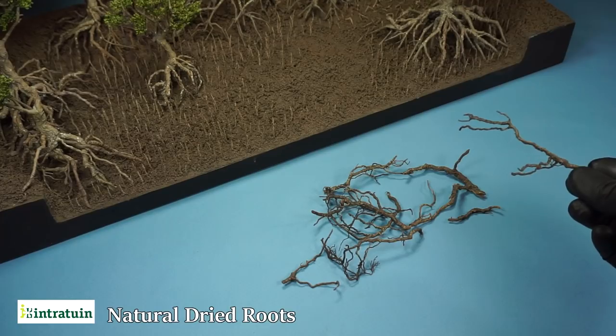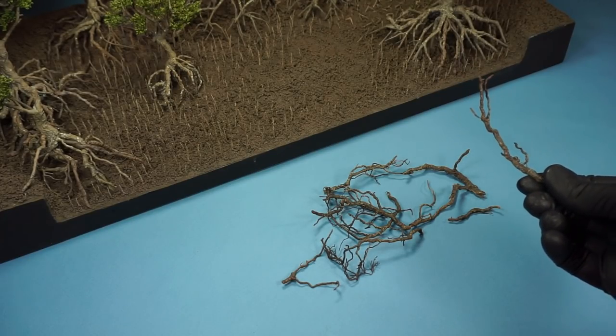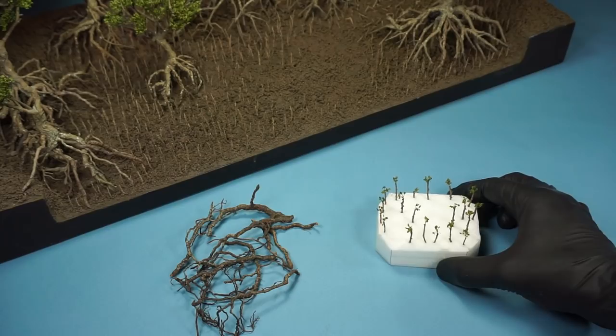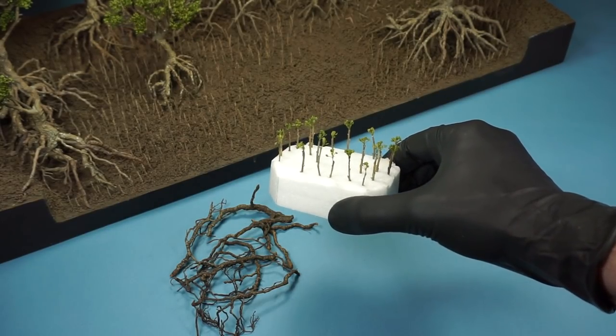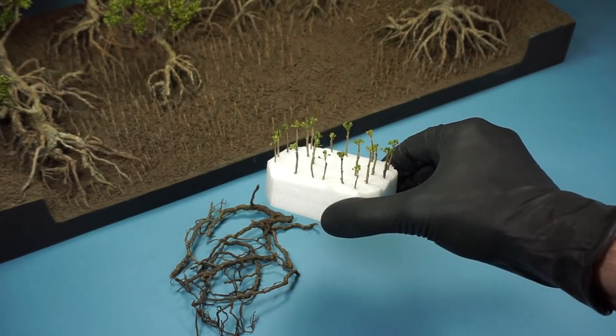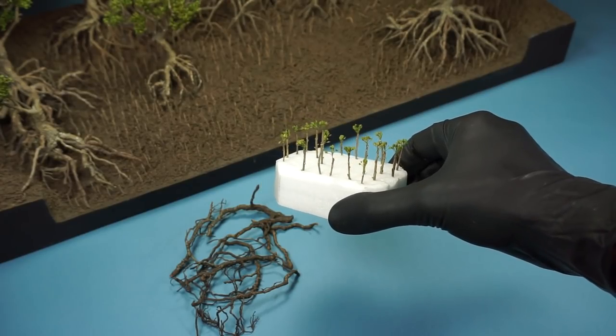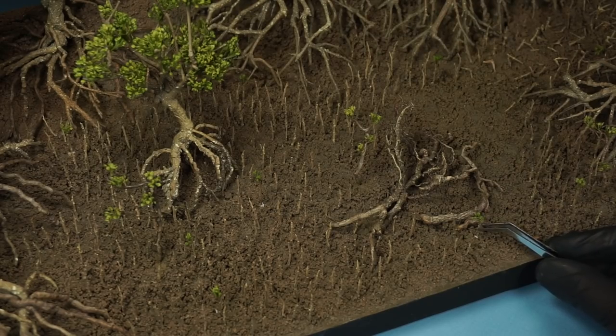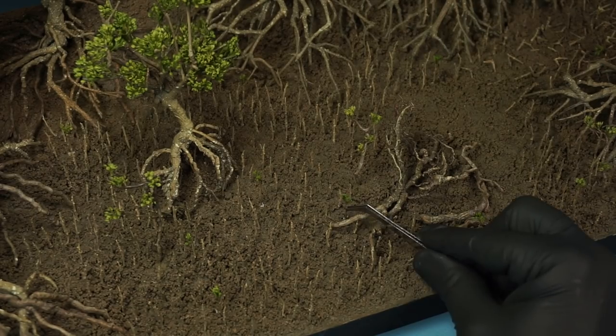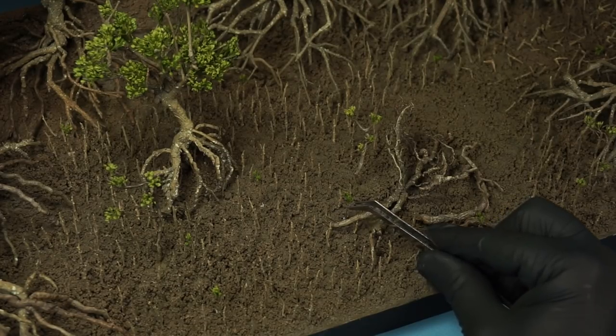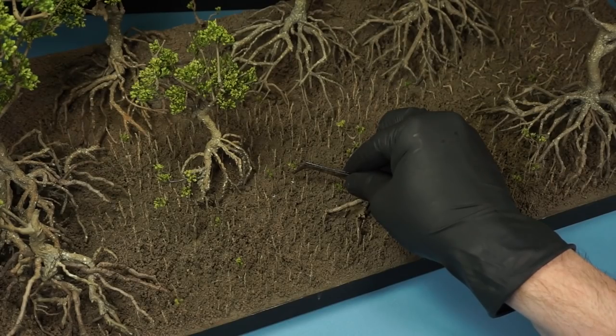Alongside these I'm adding some of these dried roots and also a few of these tiny mangrove newborns that I've made. Adding trees at different stages of their life cycle can be a nice way to add a bit of character to a diorama.